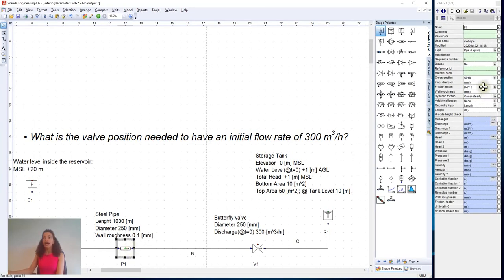which has an inner diameter of 250 millimeters, a roughness of 0.1, and a length of 1000 meters. We can also insert one kilometer and press enter. By doing so, WANDA will automatically convert kilometer to meter because the unit setting is currently in meters.